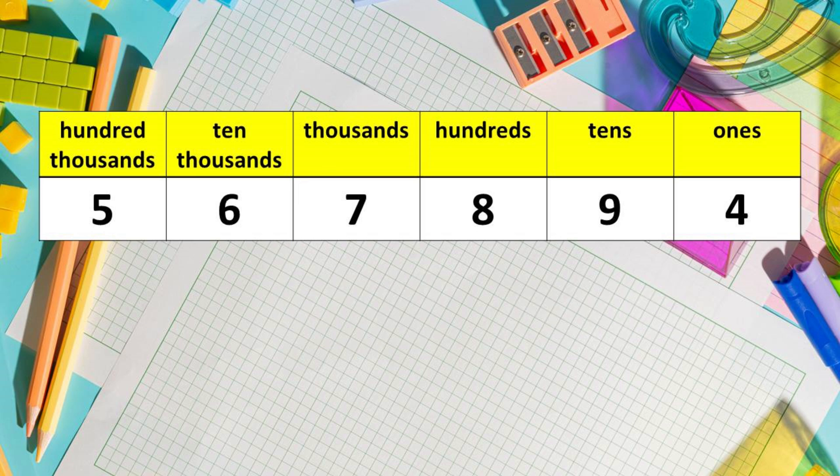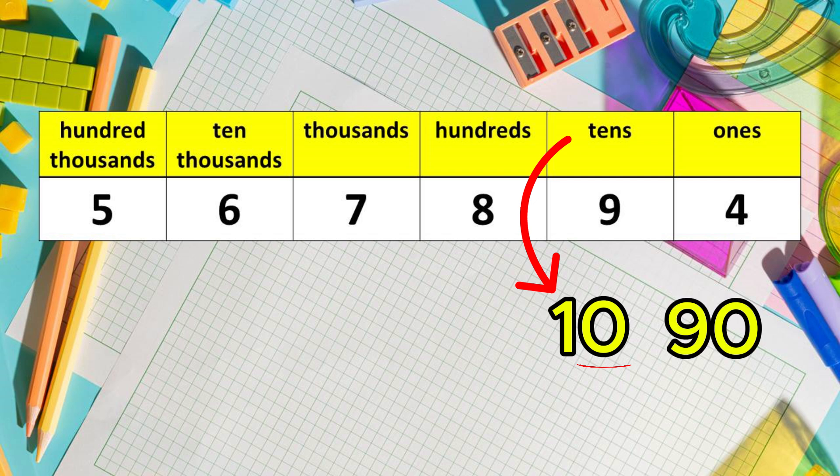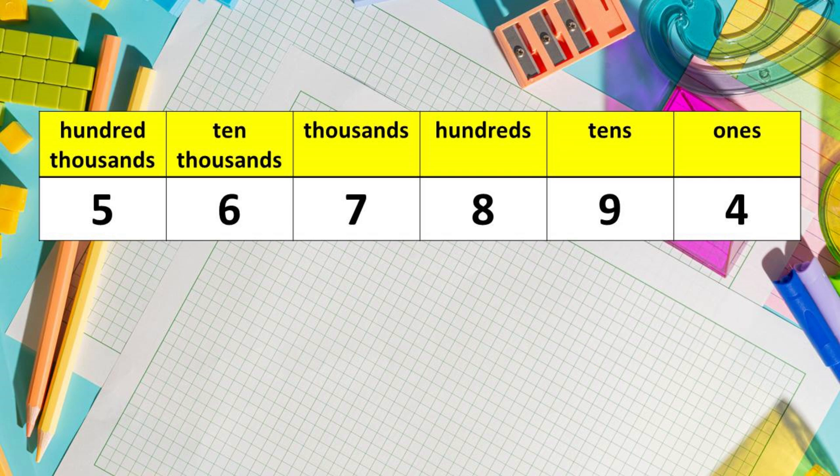How about the digit 9? It is in the tens place. There is only one zero in 10. Therefore, you just add one zero to nine. This becomes 90. Its value is 90. And then we have 4. 4 is in the ones place. This one has no zero. So it remains 4. The value of 4 is 4.